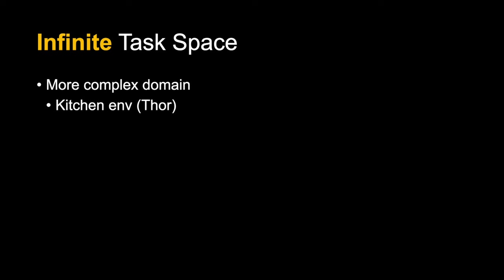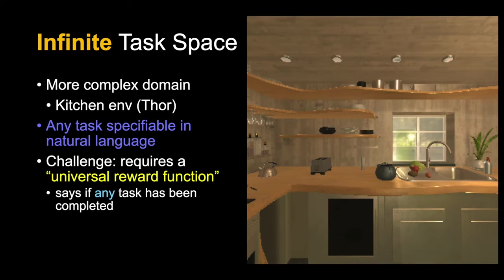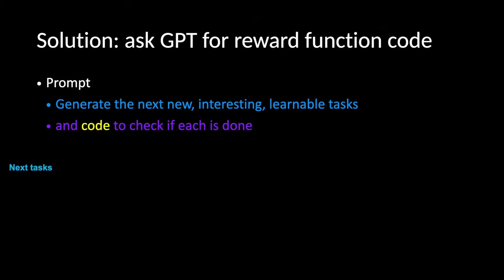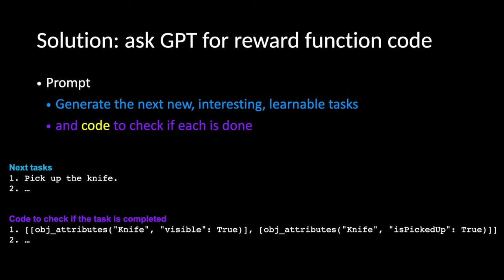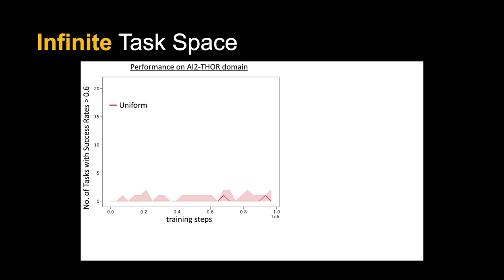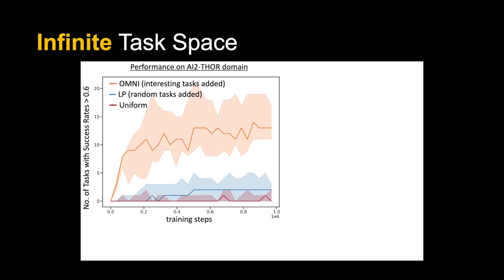We then pushed this to an infinite task space using the kitchen environment of Thor, where we can ask for any task specifiable in natural language. A problem is we need a universal reward function that can tell us if any specifiable task has been completed. The solution is to ask GPT for reward code — the prompt asks for the next most interesting task and code to check if that task is done, which we run against the state. In this domain, uniform sampling does terribly, learning progress also does poorly due to the huge task space, and OMNI does much better by focusing on interesting tasks.